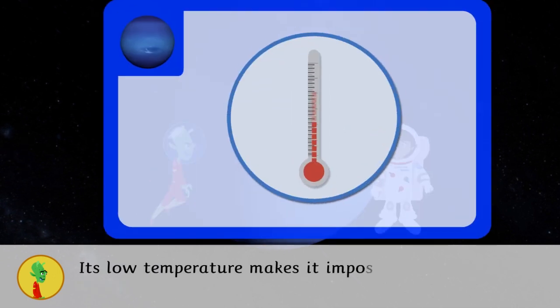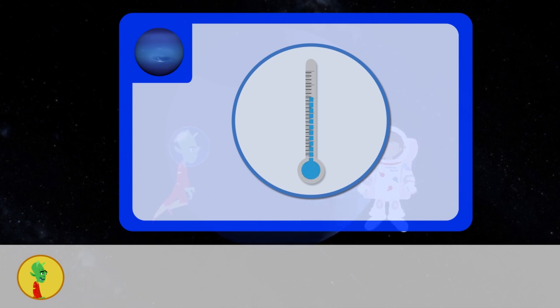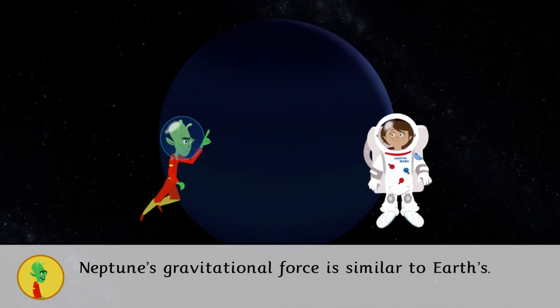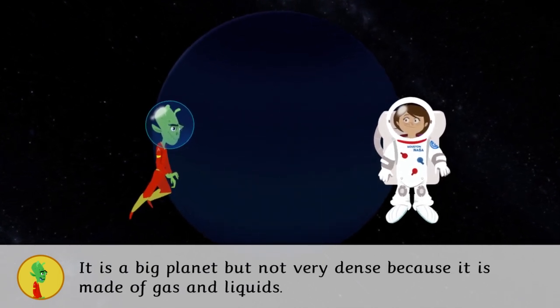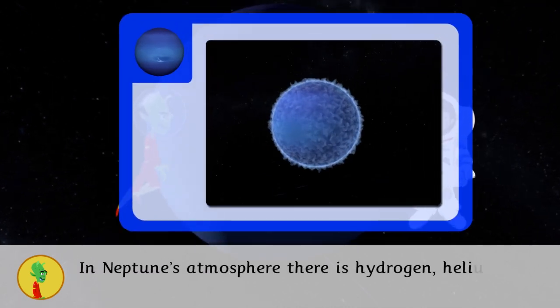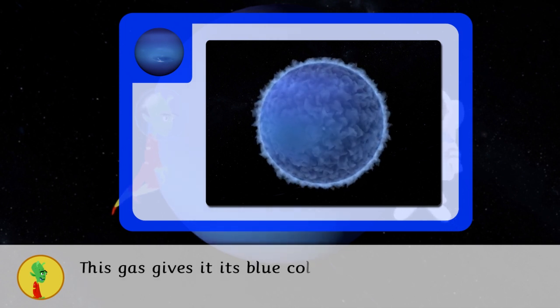Its low temperature makes it impossible for human life. Neptune's gravitational force is similar to Earth's. It is a big planet but not very dense because it is made of gas and liquids. In Neptune's atmosphere, there is hydrogen, helium and methane that can be used as fuel. This gas gives it its blue color.